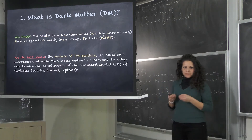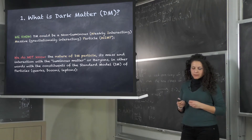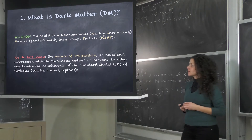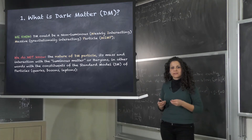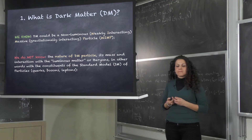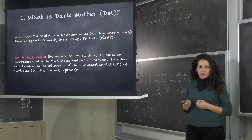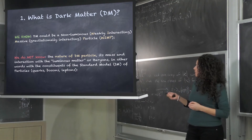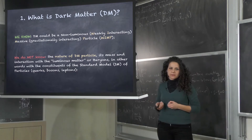To summarize the first question — what is dark matter? We know that dark matter is a kind of non-luminous matter that interacts gravitationally, but we don't know its nature as a particle so far. In particular, dark matter could be a WIMP, a weakly interacting massive particle.